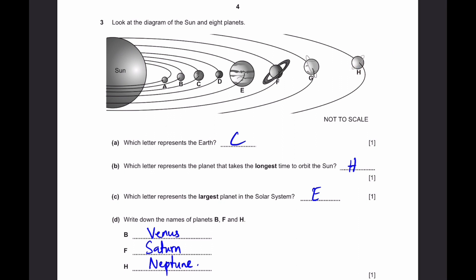Which letter represents the largest planet in the solar system? That is simply E. Because Jupiter is the largest and E is Jupiter. Fifth one from the sun. Write down the names of planets B, F, and H. B is the second, so it's Venus. F is the sixth, so it's Saturn. And Neptune, that's H, because it is the last.